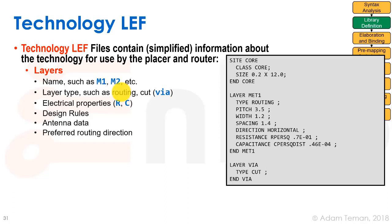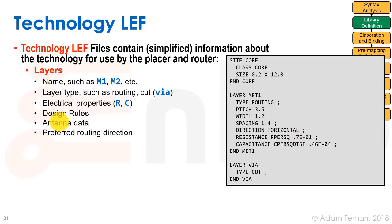What does a tech LEF have in it? It has things such as the layer definition. Here you see layer MET1 — it's a routing layer type. This defines the pitch, width, spacing, direction, resistance per square, and capacitance per square. So it contains the layer name, layer type, electrical properties, design rules, and so forth.